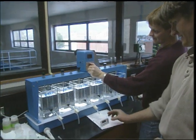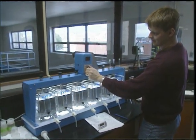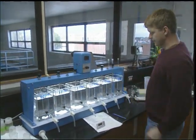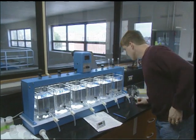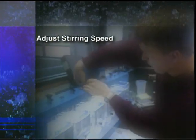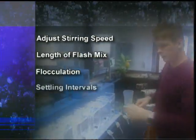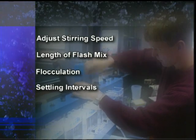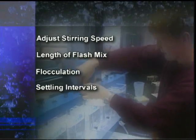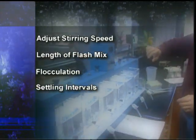Perform several calibration jar tests to ensure that the results will mirror the performance of the full-scale chemical treatment used in the plant. Adjust the stirring speed, length of the flash mix, flocculation, and settling intervals until the jar test conditions closely match those used in the full-scale plant.